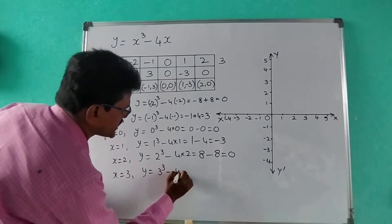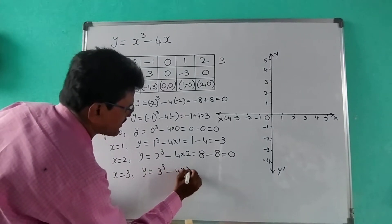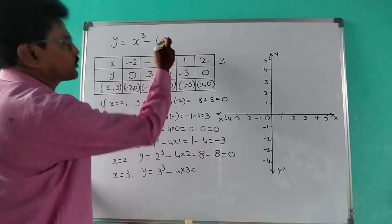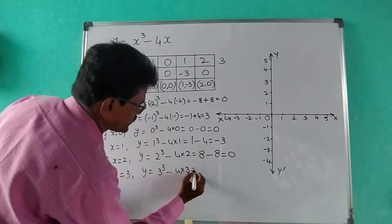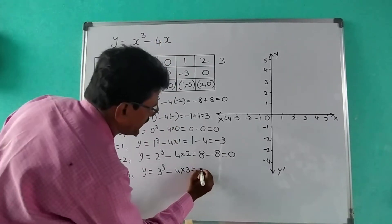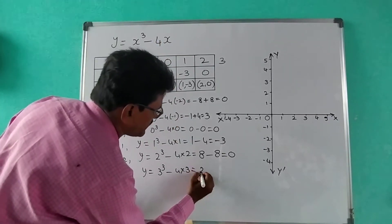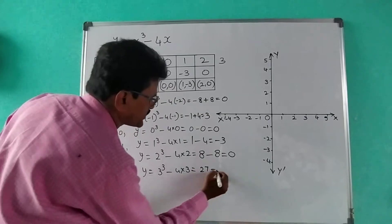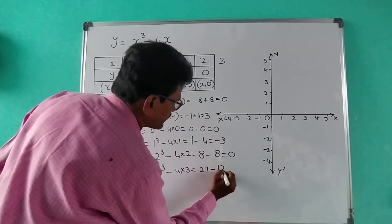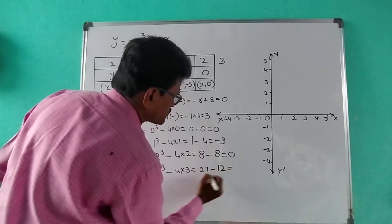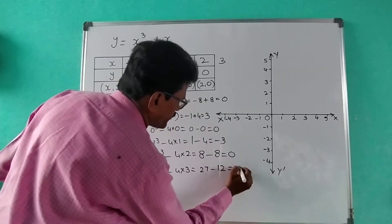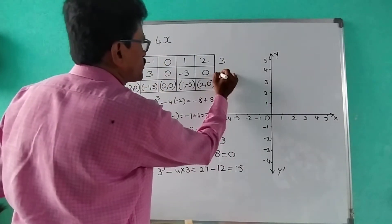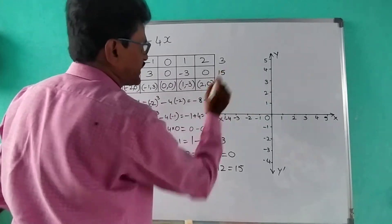If you want, you can also take x = 3. For x = 3, y = 3³ - 4(3) = 27 - 12 = 15. So for x = 3, we are getting y = 15.